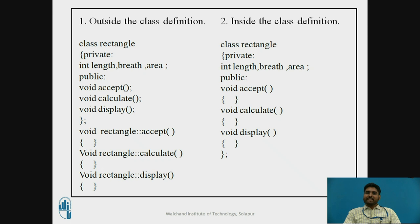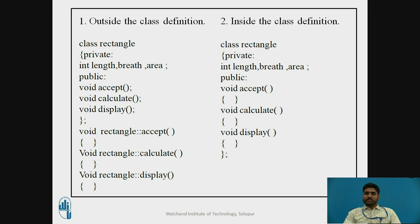Similarly, for inside the class definition, we again have class rectangle with private data members. The difference between outside and inside is that here in the public section the member functions are defined directly — the function body with cout and cin is written inside the class, void calculate performs the calculations, and void display gives the output. So inside the class definition, member functions are defined within the class itself.